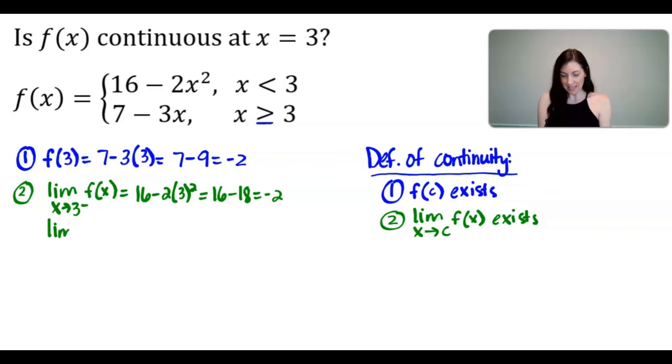Now let's find the limit as x approaches 3 from the right-hand side of f of x, which we are going to use the bottom function because that's where x is greater than or equal to 3 and thus approaching 3 from the right-hand side. 7 minus 3 times 3—we did that above when we were evaluating f of 3—and we get negative 2.